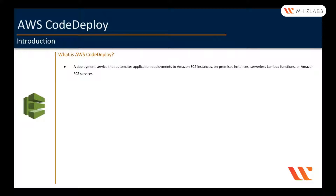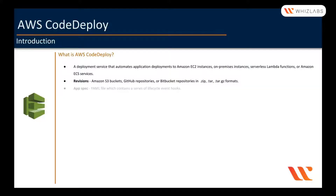Using CodeDeploy, we can deploy the code which is stored as .zip or .tar or .tar.gz, stored in an Amazon S3 bucket or GitHub or Bitbucket, and we call them as revisions. Along with the code we are deploying, we need to provide an AppSpec file.